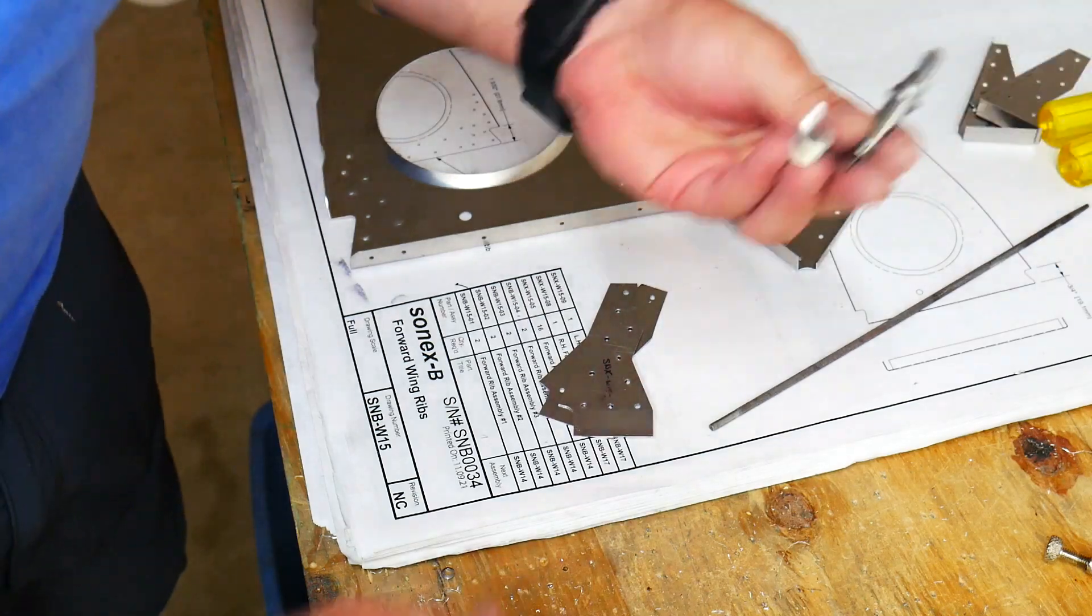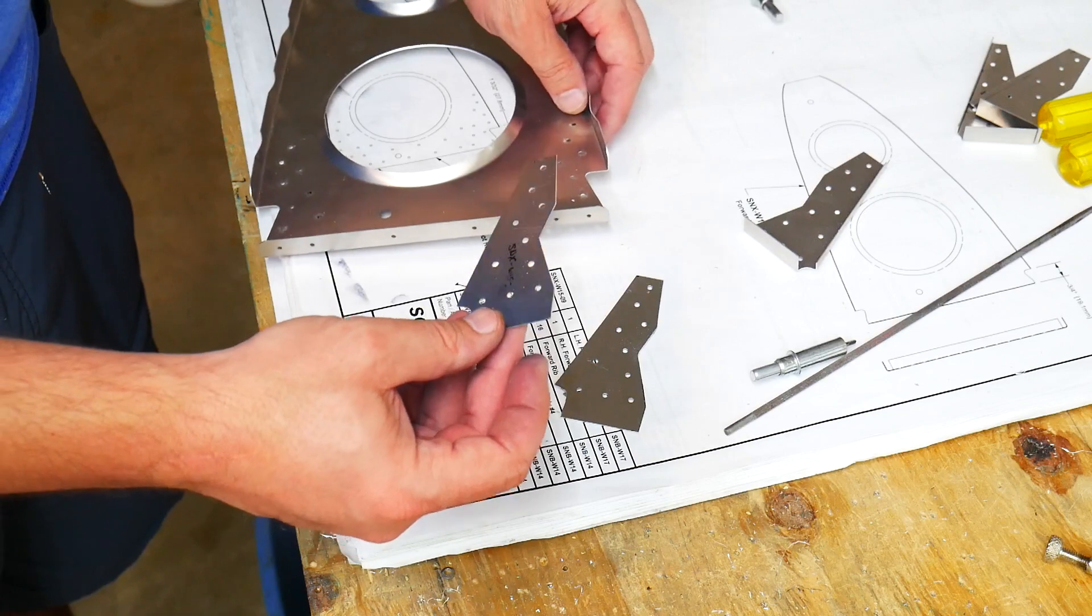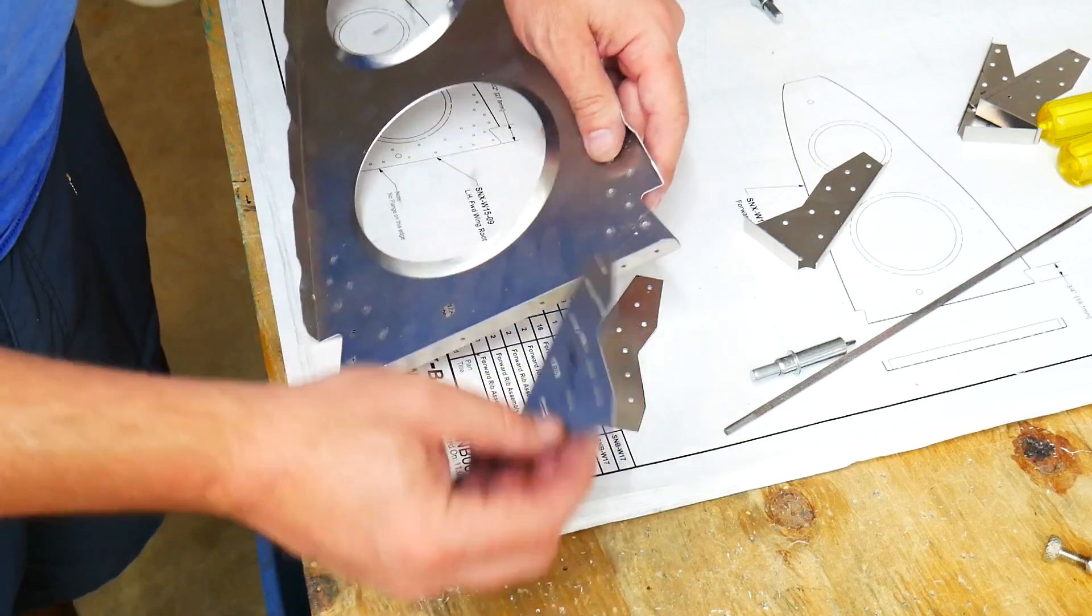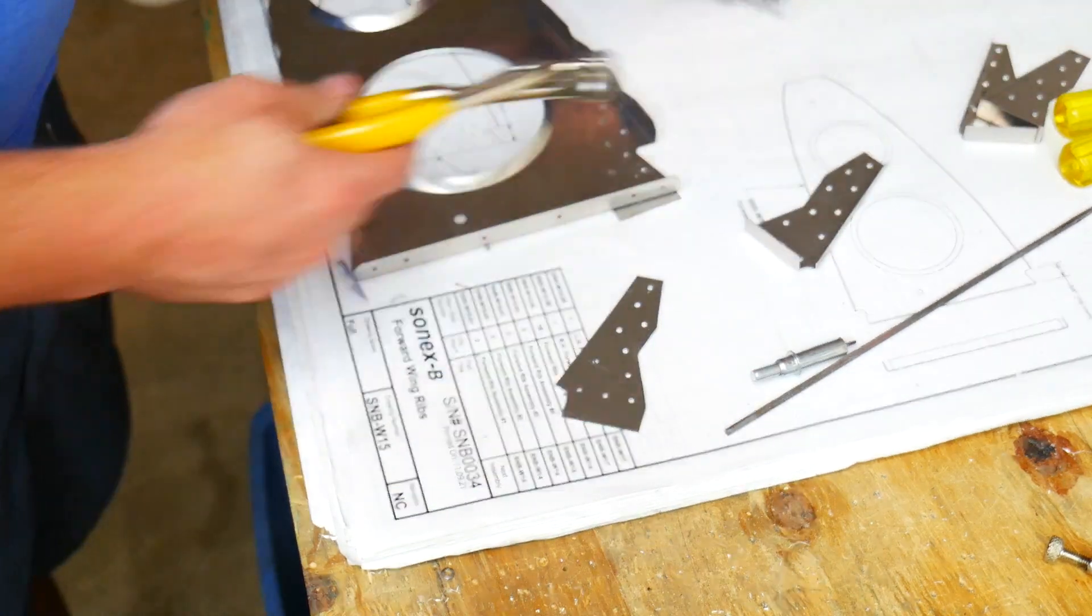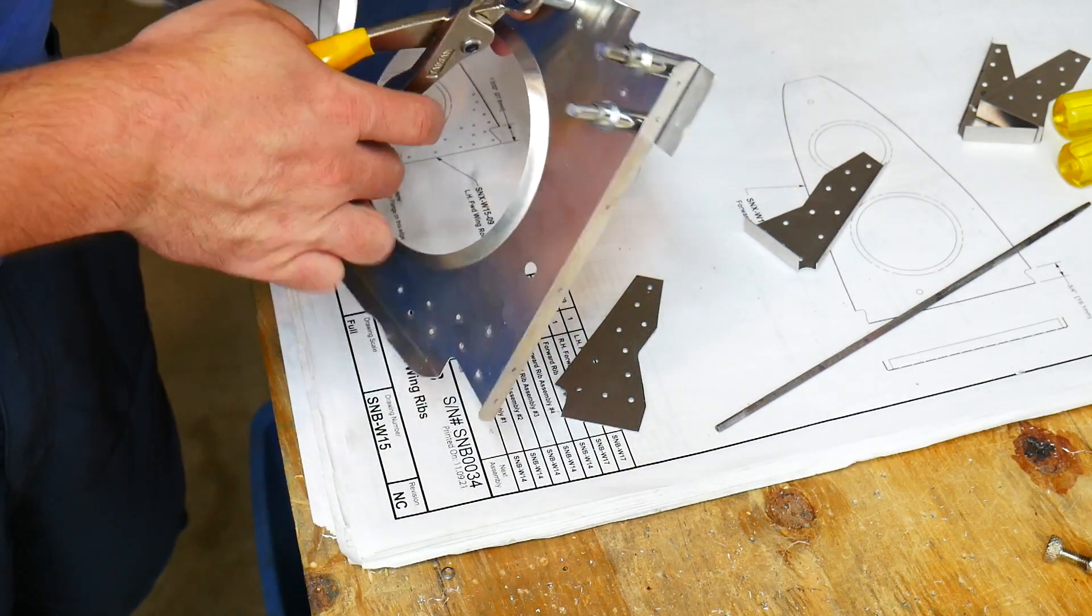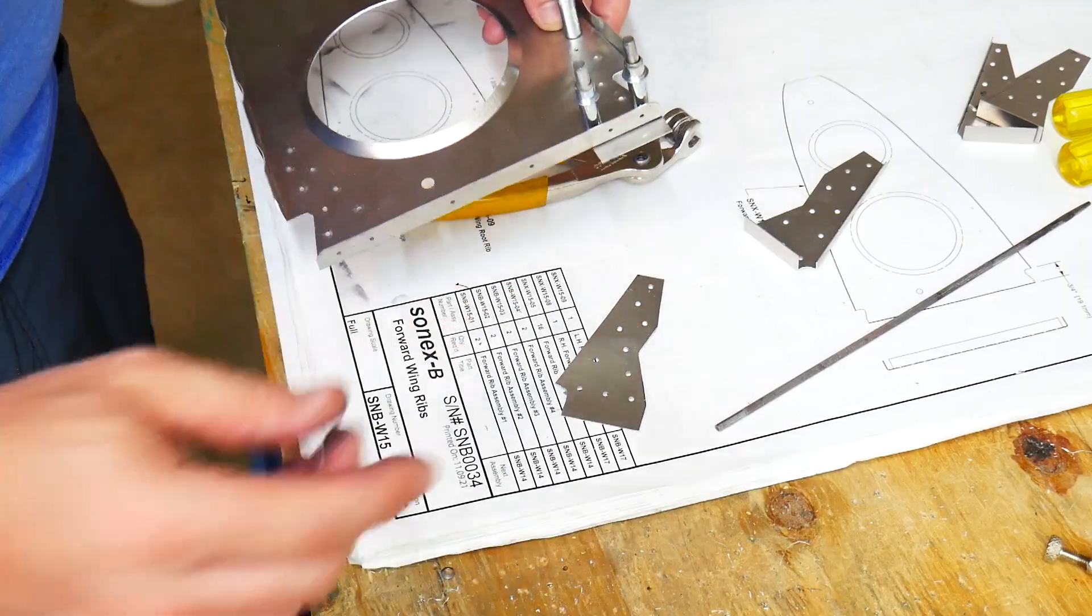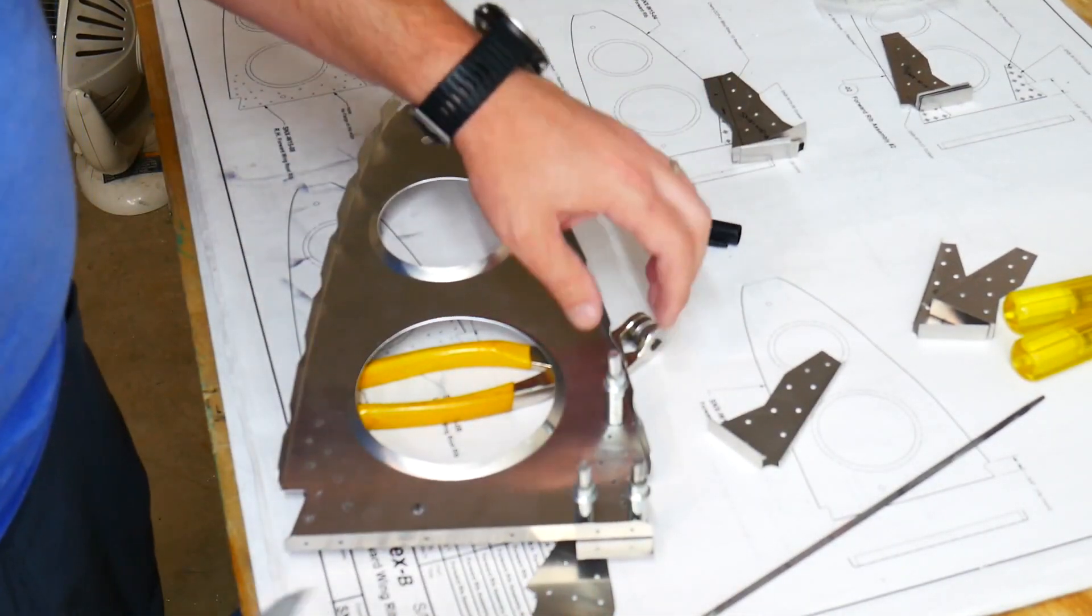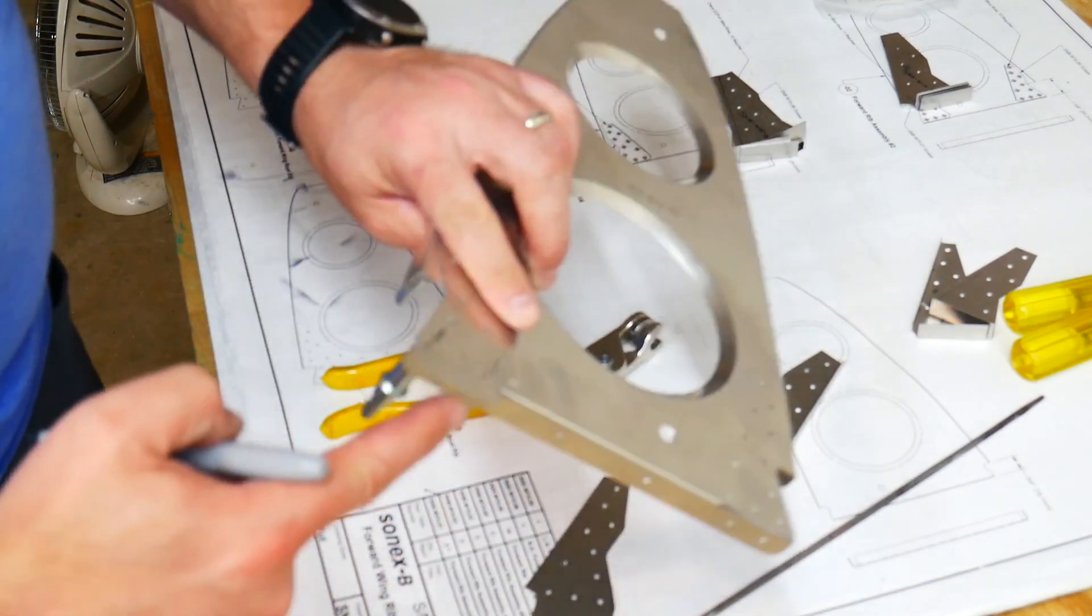So what I've found works really well is to grab a couple of Clecos and take your gusset that you're gonna bend. So this is a 06 that's gonna go up here on the top of this. What I'll do is instead of putting it on the side that it's gonna eventually go on, I'm gonna put it on the bottom side of this with a couple of Clecos. I've been using three on this particular part, two right near the part where I'm gonna bend and then a third one just to keep it from moving around too much.